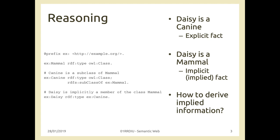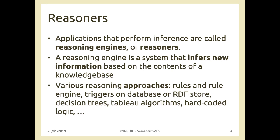We can also say that since daisy is a canine and canine is a subclass of mammal, daisy is also a mammal. This is not explicit — it is implicit information, because we can by thinking go through the entire chain from the individual daisy up to the mammal class. So the reasoning process in general answers the question: how do we derive implied information? Reasoners, like the one used in Protégé, are applications that perform this type of operation, called inference — making explicit the implicit knowledge using reasoning engines or reasoners.